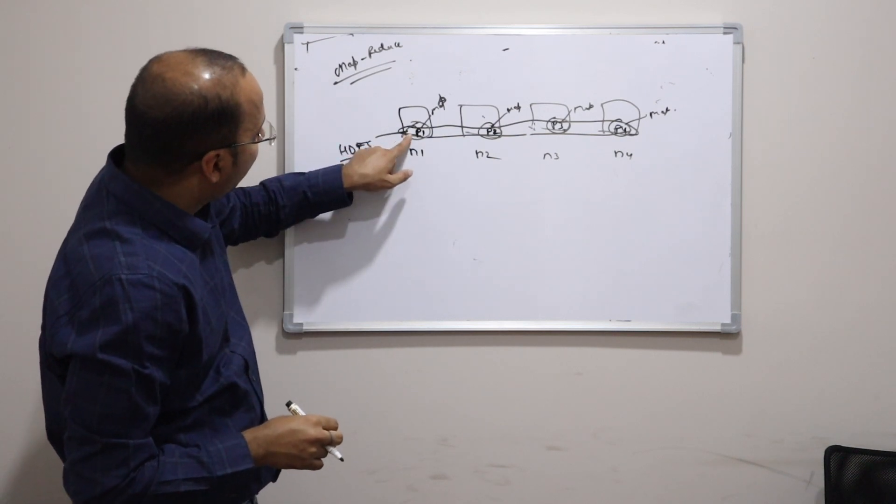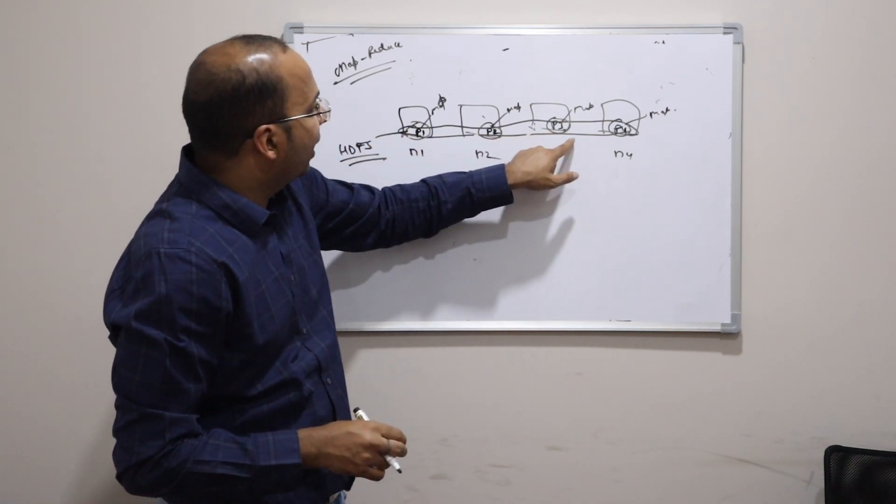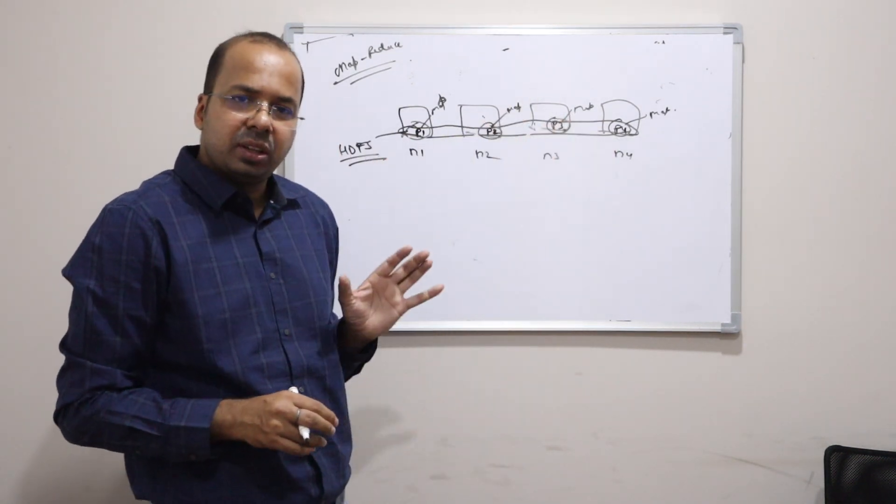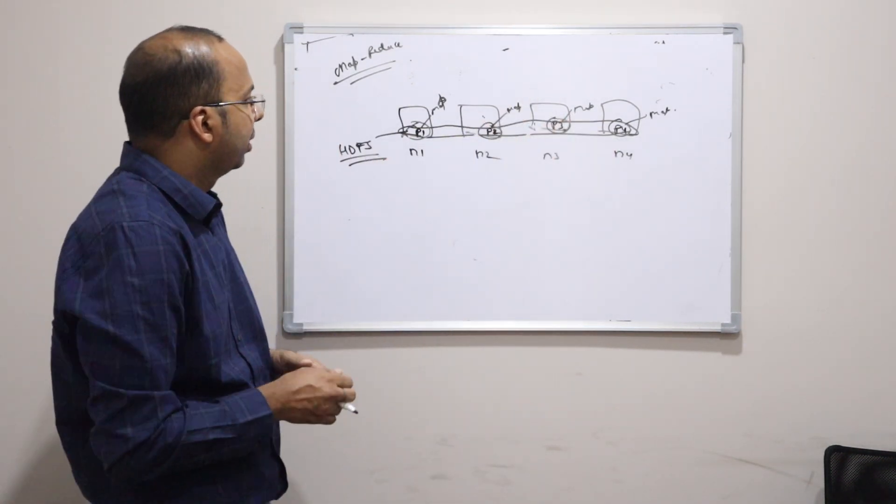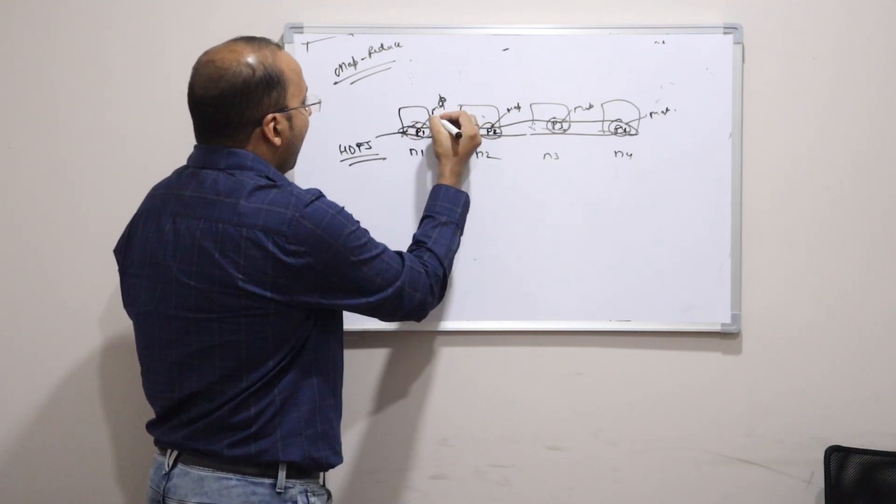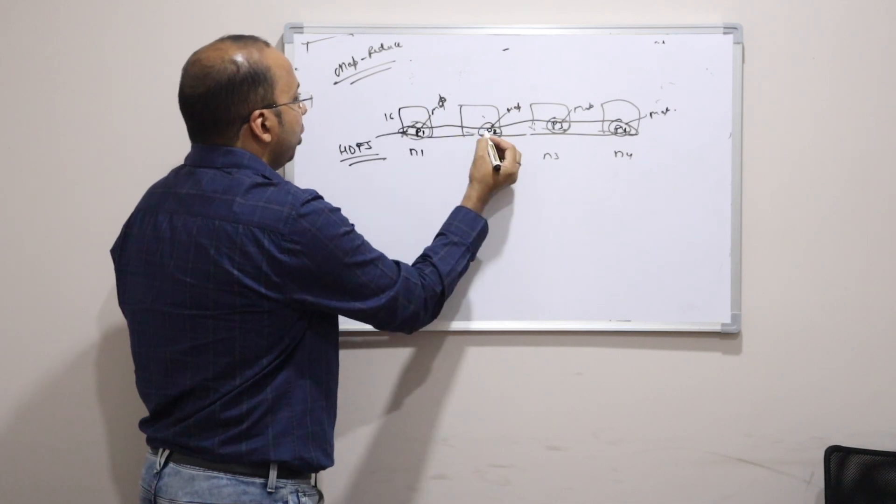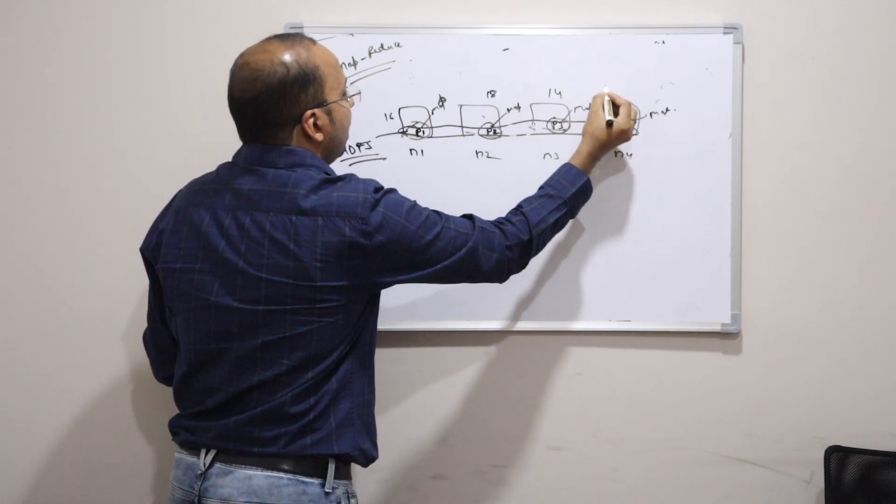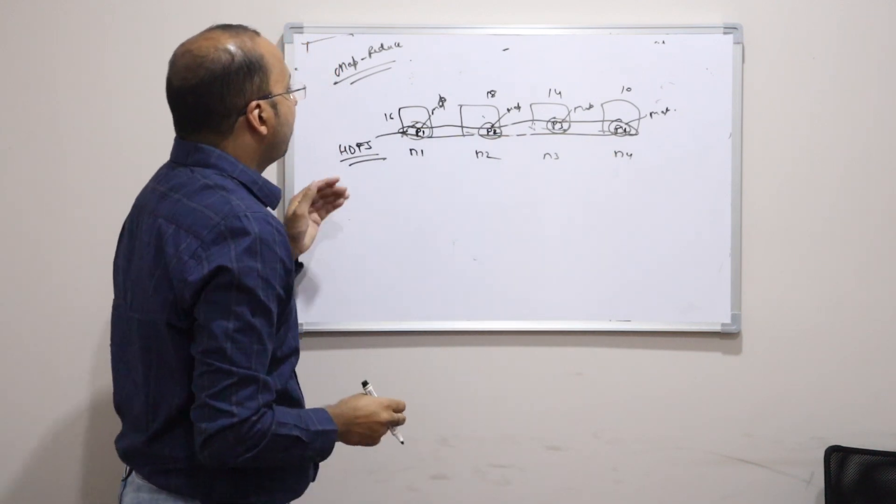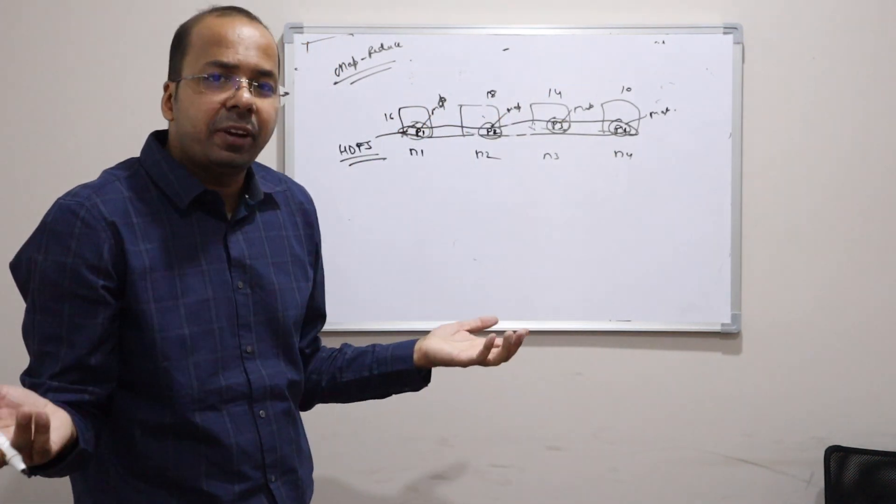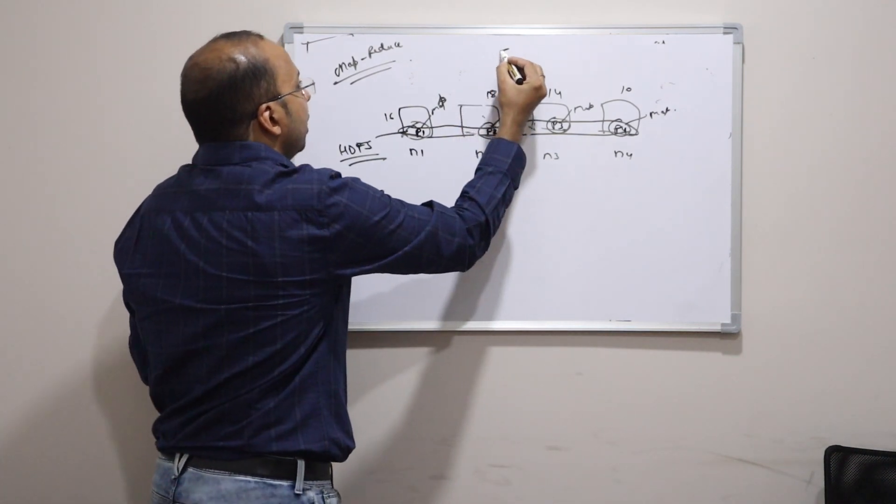And mapper is nothing but the programs which run here on this machine. Or the processes which are here on this machine. Individual machines. Now once this map is complete it will say that okay the output is 16. It will say let's say the output is 18. Let's say 14 and 10. So the output of mappers is 16, 18, 14 and 10.